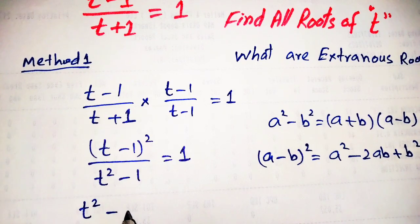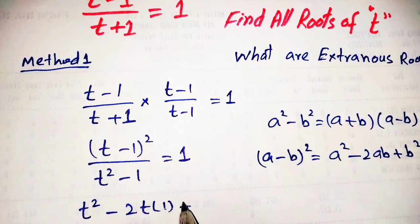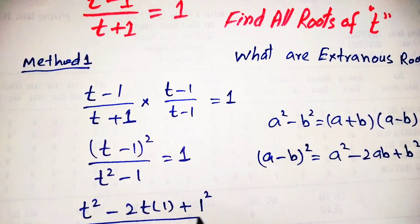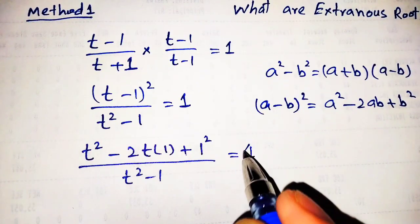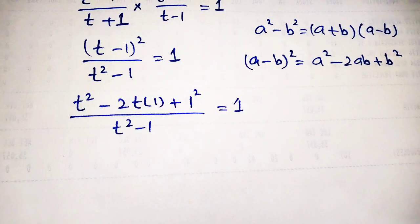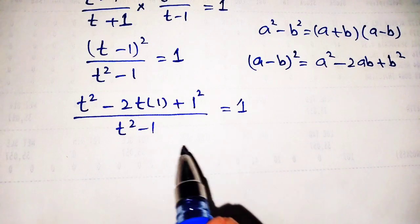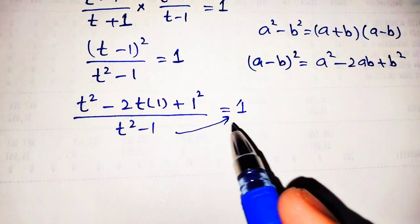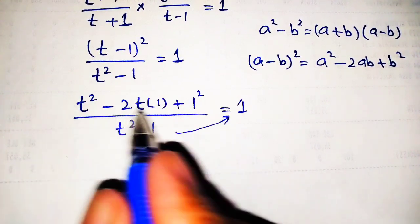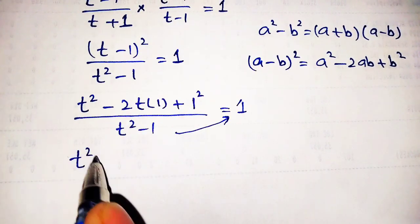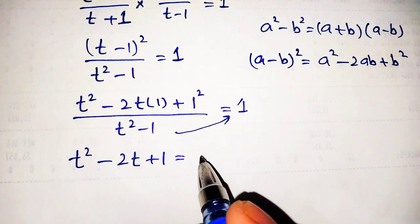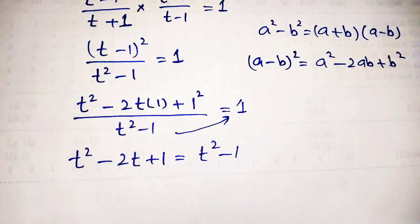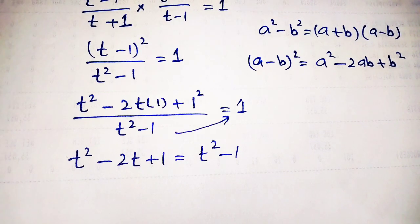Applying this, the numerator becomes t squared minus 2t times 1 plus 1 squared, over t squared minus 1, which equals 1. By cross multiplication we get t squared minus 2t plus 1 equals t squared minus 1.